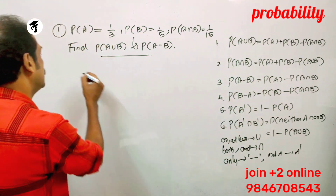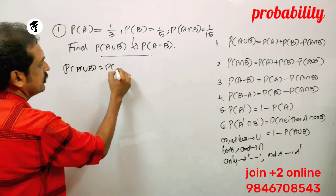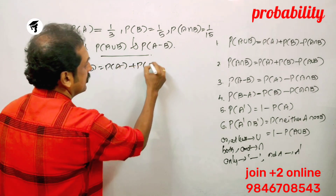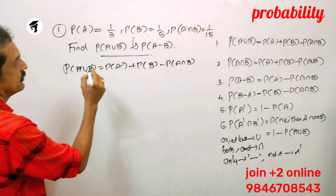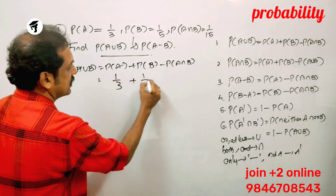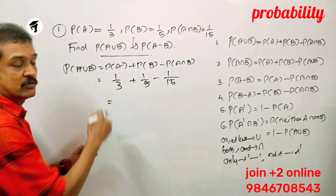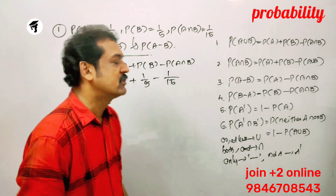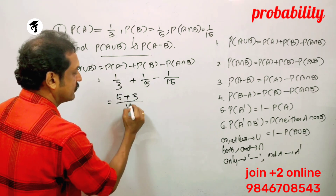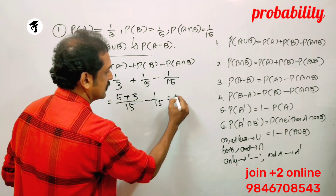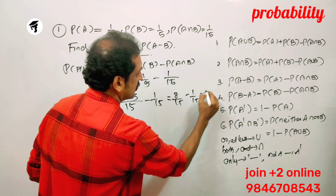P of A union B is equal to the formula: P of A plus P of B minus P of A intersection B. P of A union B is 1 by 3 plus 1 by 5 minus 1 by 15. That gives 5 by 15 plus 3 by 15 minus 1 by 15, which equals 8 by 15 minus 1 by 15, equal to 7 by 15.